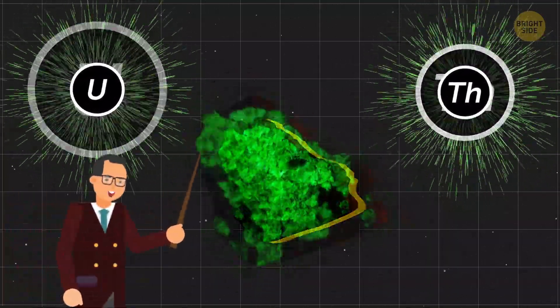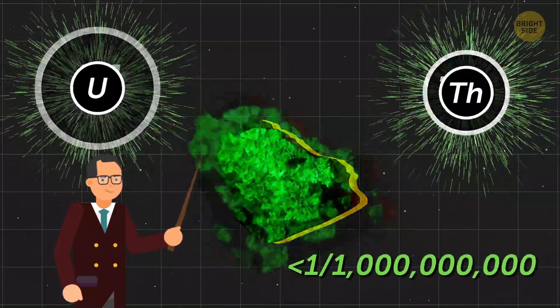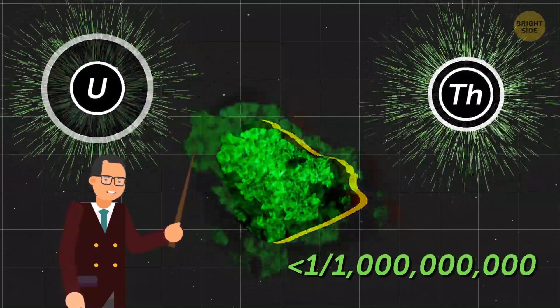It's estimated that there's less than 1 gram of astatine in the whole Earth and that it comes from the decaying of uranium and thorium. Our chances of coming across it are less than 1 in a trillion, and even then, we won't know.